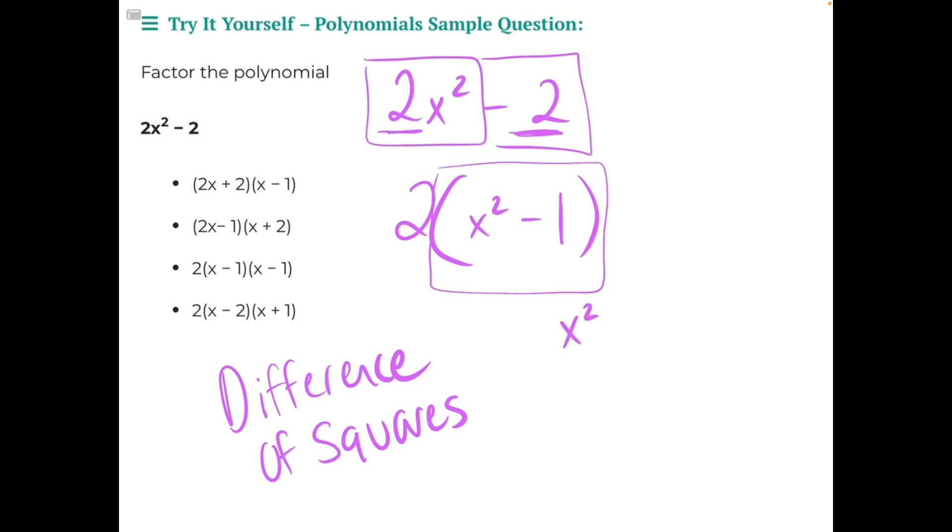So x squared is a perfect square. It just equals x squared. 1 squared would give us 1, 2 squared would give us 4, 3 squared would give us 9 and so on.